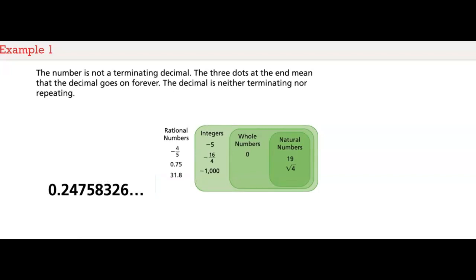The number is not a terminating decimal. The three dots at the end tell us that the decimal goes on forever. We don't know what they are. Maybe five, eight, three. But we do know that they are not repeating. Nor are they all zero.